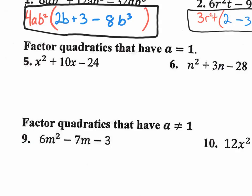Factoring quadratics that have a equal to 1 — I love these, they're super easy. There's no number in the front of the variable squared, which makes it beautiful. Because you can automatically set up the factored form with x here and x there, since x times x is x squared. When there's no number in front, it's clean. If you had a 6, you'd need factors like 2 and 3, which gets complicated — that's the multi-step process we already learned.